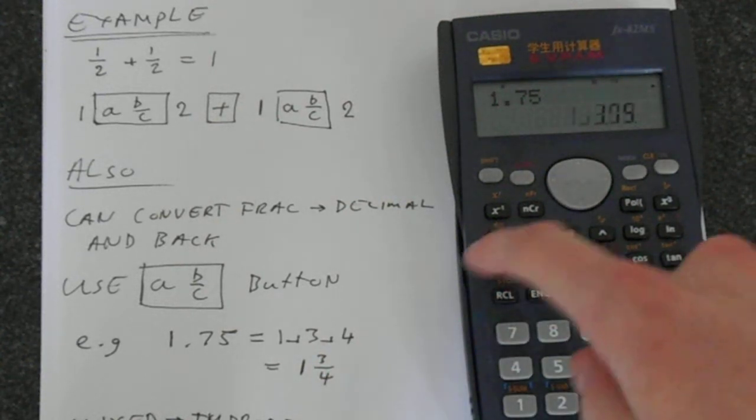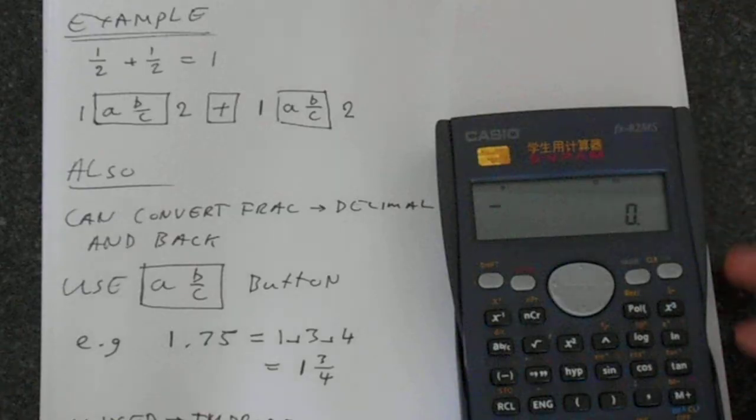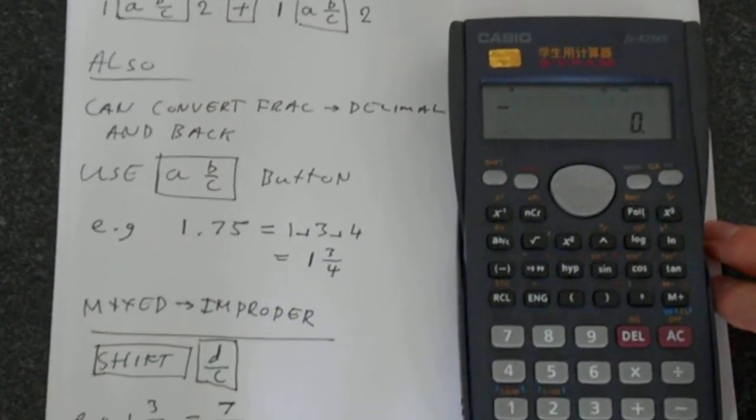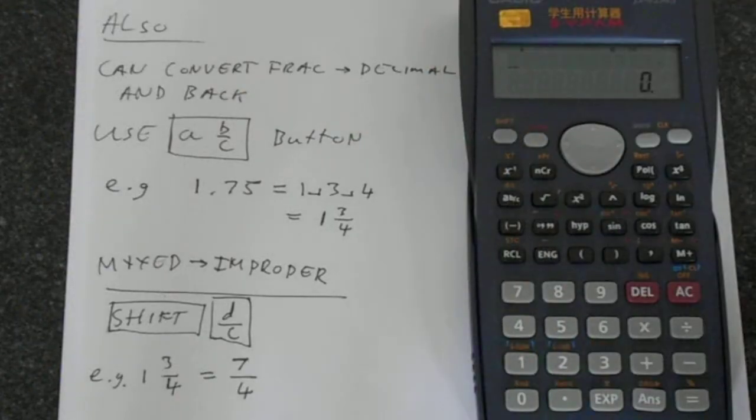And if we press the A B over C button again, we get 1.75. There's one more interesting thing this calculator can do: it can switch between mixed and improper fractions and back.